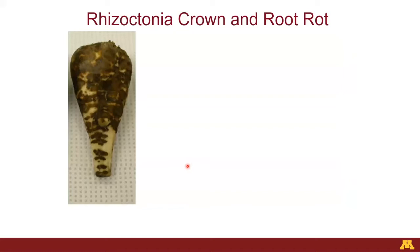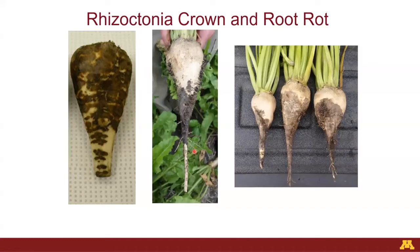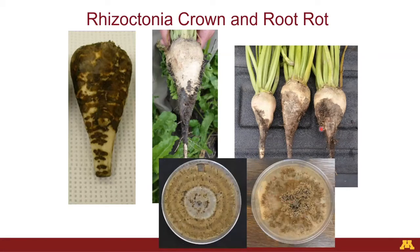Prior to Roundup Ready sugar beets, we used to see lots of crown rot and root rot. Typically we see a ladder-like pattern on the roots with very dark lesions. But more and more, we are seeing the crown looking very healthy while the lower part of the roots are completely rotted. Within a couple of weeks, these plants will completely die. Rhizoctonia makes resting structures known as sclerotia, which can stay in the soil for two to three years. When you have edible beans, soybeans, or corn — rotation crops that are also good hosts for rhizoctonia — that's how this inoculum is maintained from crop to crop.